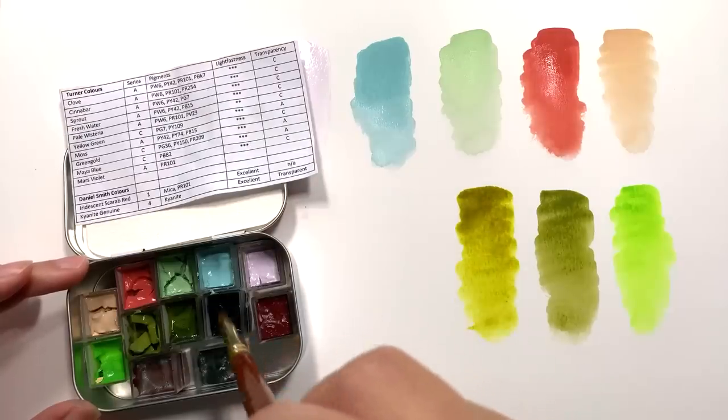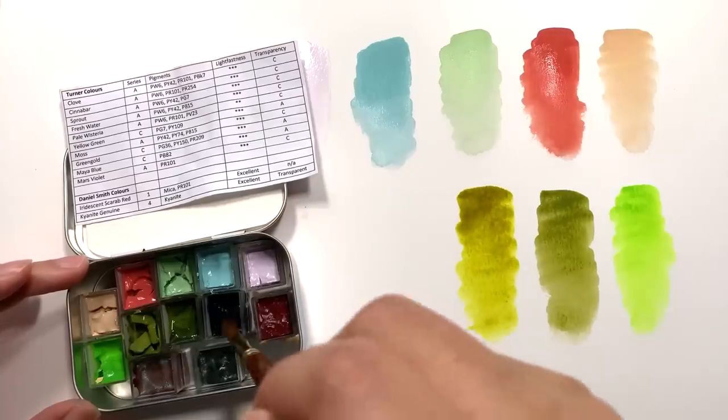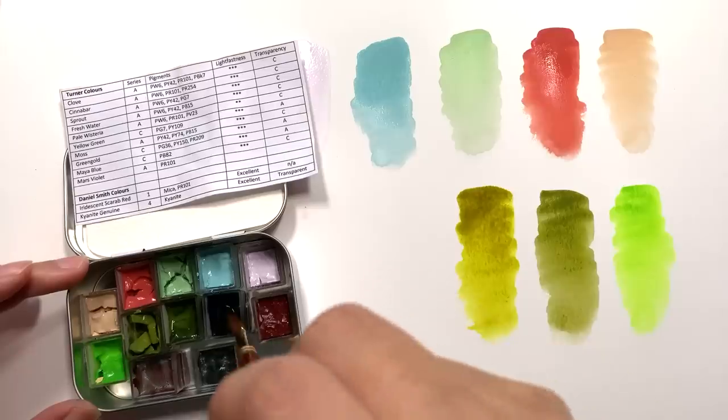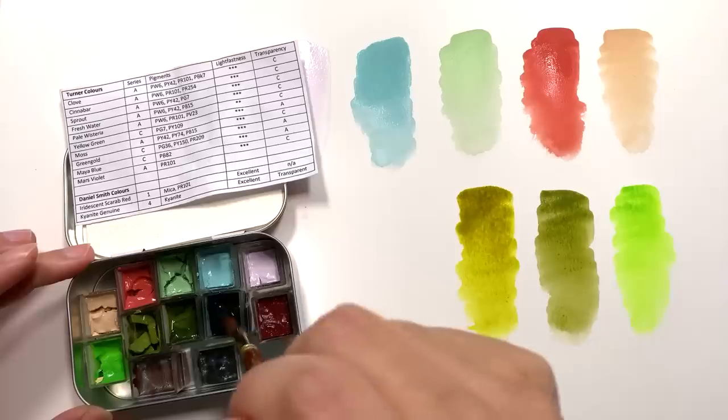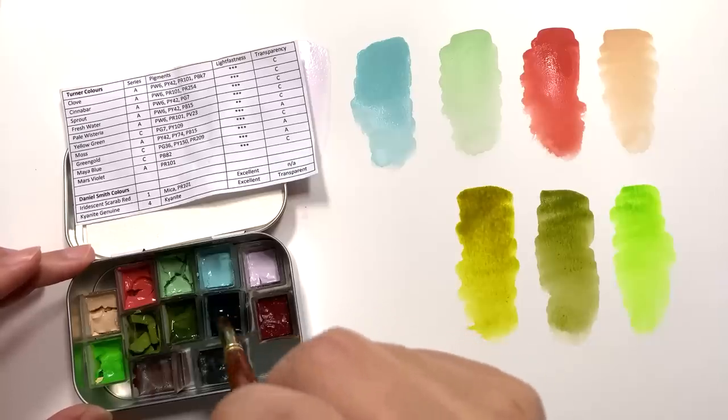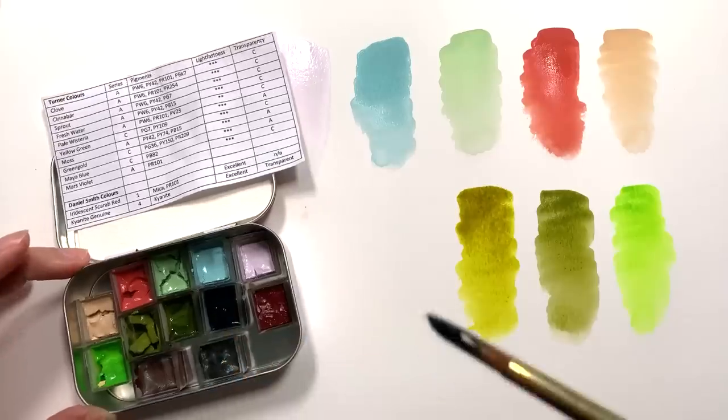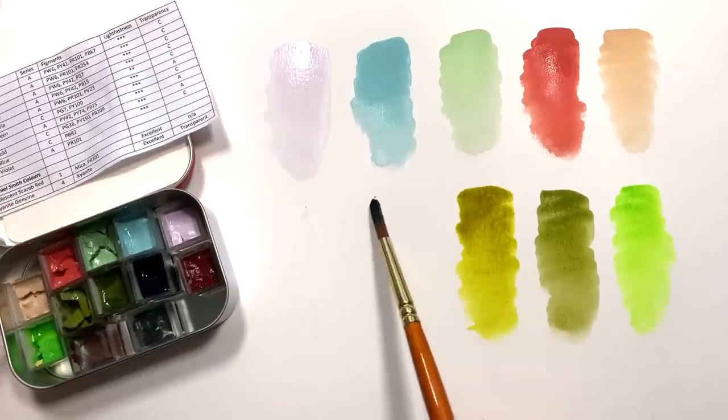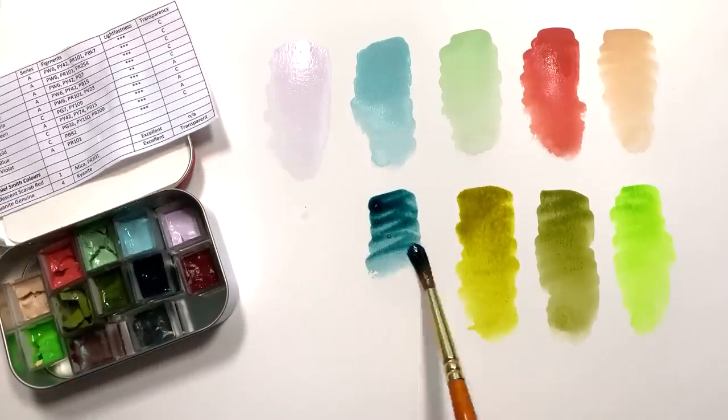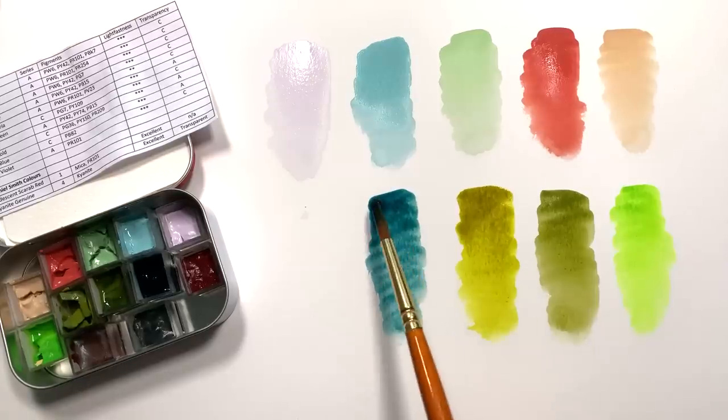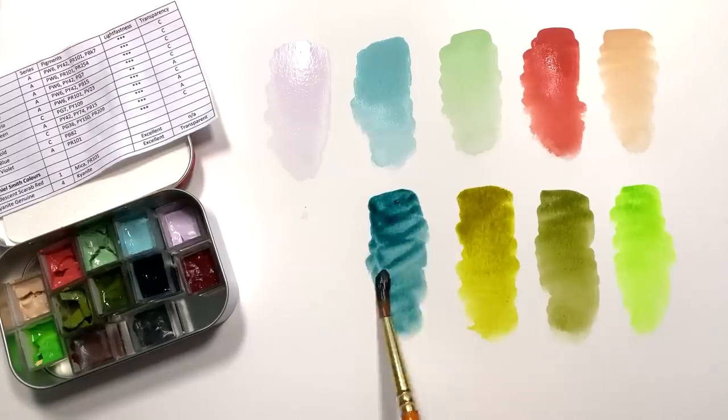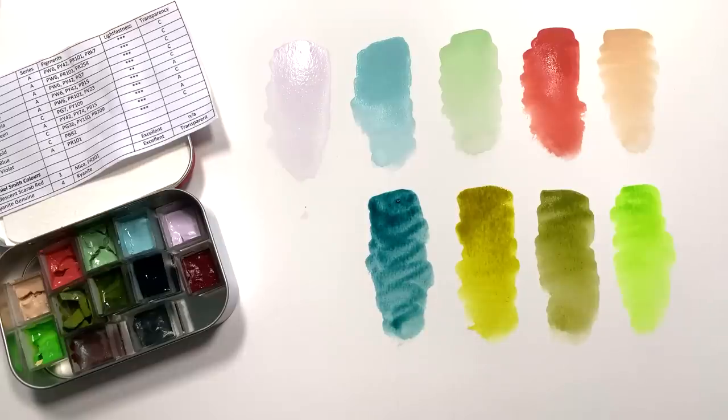And then Mayan blue. Turner is the other brand that does Mayan colors. And when you read the Turner leaflet, they say they're the ones that developed the Mayan colors. And then Daniel Smith's kind of insinuates that they kind of did it first. So who knows who did the colors first? But they have a lovely range of Mayan colors. And this is my first Mayan color that I've tried. It is really nice color. Different from the Mayan blue of Daniel Smith. Let me grab it for you.